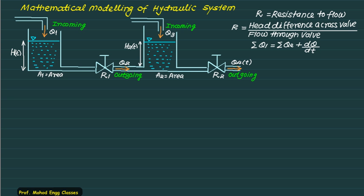Take one simple example of mathematical modeling of a hydraulic system. Here we have two tanks. This tank and this tank both have an input. Let's say this input is Q1 and this input is Q3. Both of these inputs will vary with respect to time. Let the head in the first tank be H1T and head in the other tank be H2T. Let A1 be the area of the first tank and A2 be the area of the second tank. R1 is the resistance offered by the first valve and R2 is the resistance offered by the second valve. The final discharge is Q4. So we have two inputs Q1 and Q3 and one output Q4. So this represents a multiple input multiple output system.